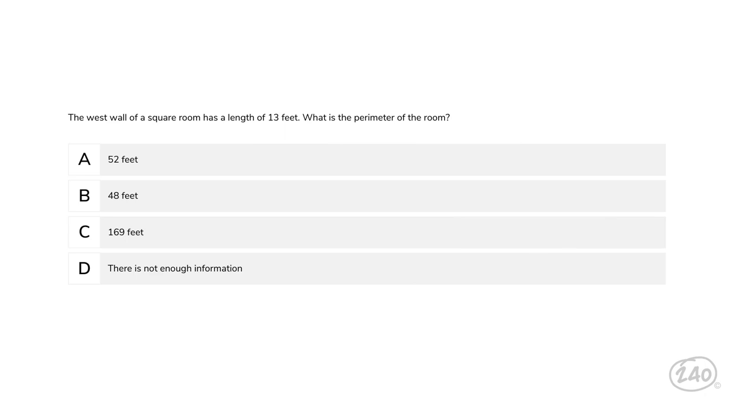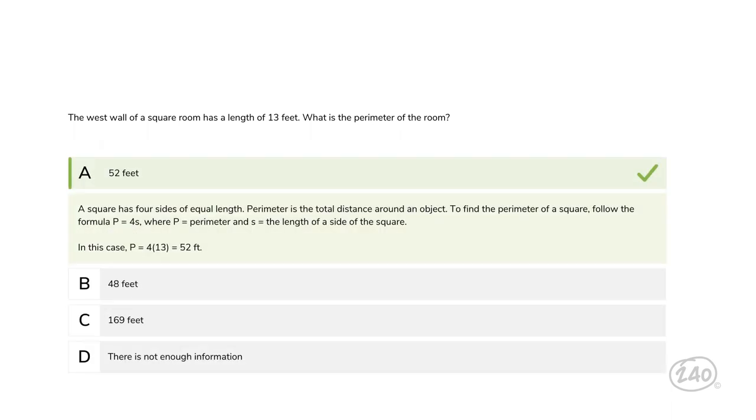We're told the west wall of a square room has a length of 13 feet, and they want the perimeter of the entire room. Well, squares have four sides of equal measure. So the perimeter, the area around the figure, would be four times 13, which is 52. Final round for today. The category is probability.